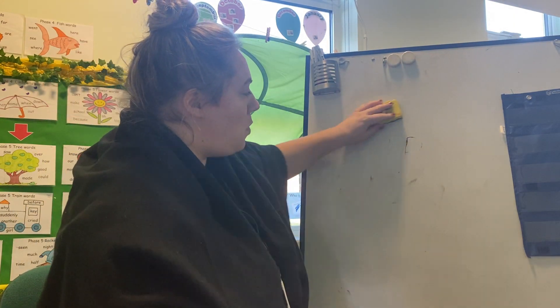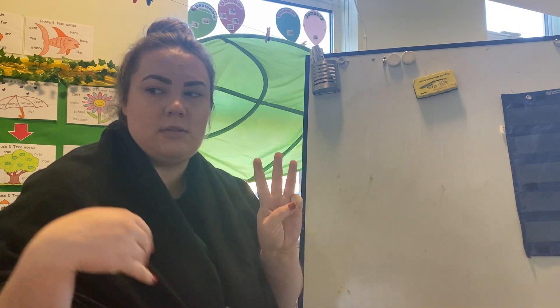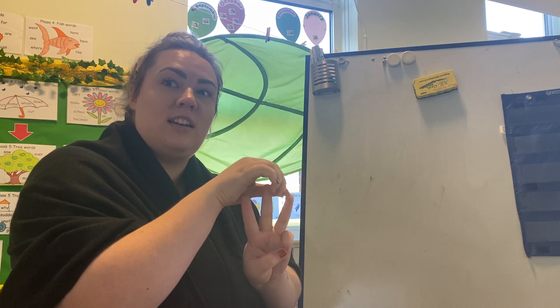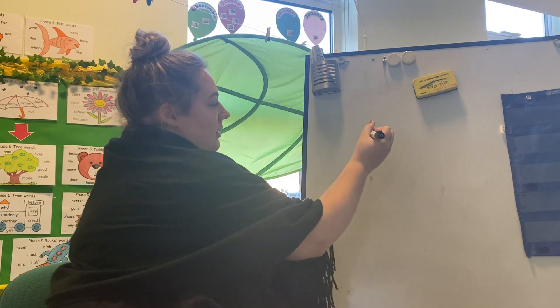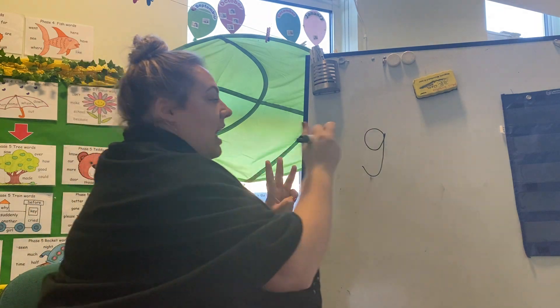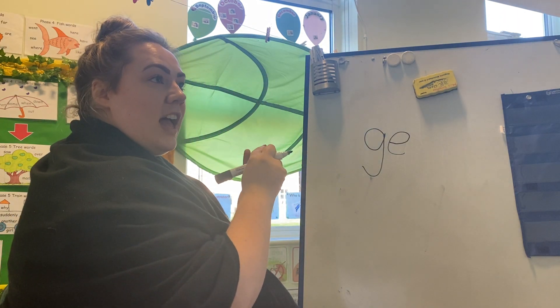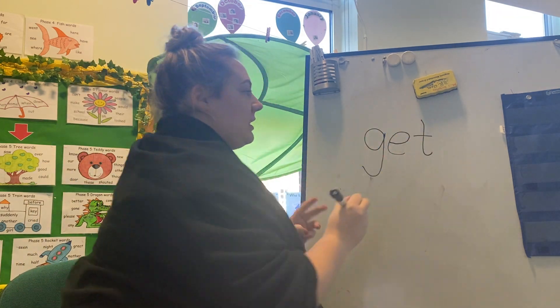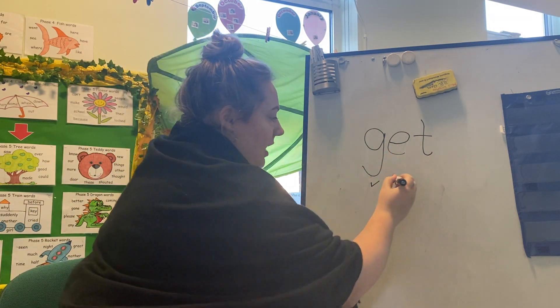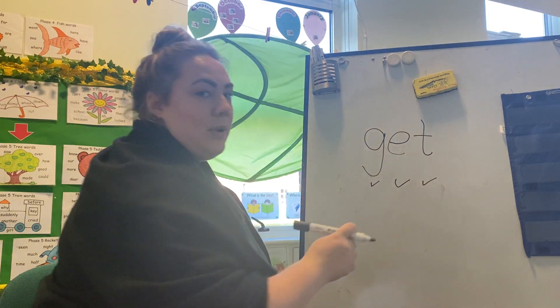Good job. We are going to do one more word — we are going to spell the word 'get'. Show me three fingers. We are going to pinch the sounds. Get — G, E, T. Get your pen or pencil. G-G-G. G, E, T. And we are going to tick it or fix it. We've got G, E, then G-E-T. And we've spelt the word 'get'.